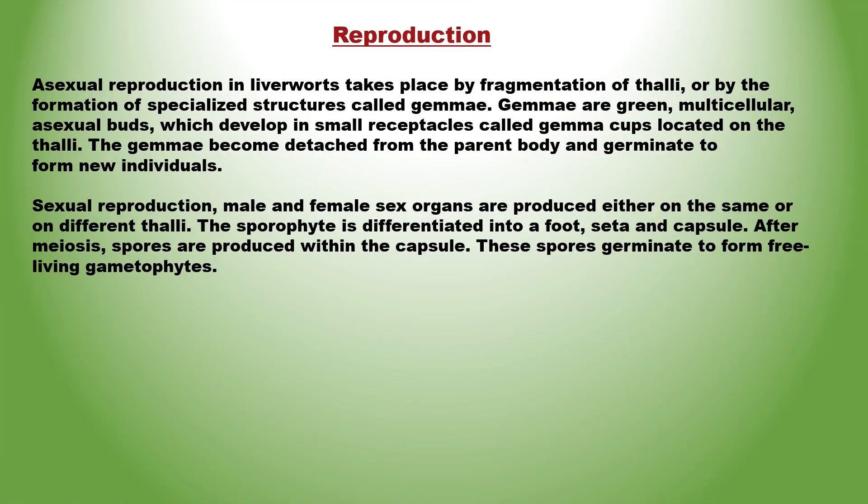Asexual reproduction in liverworts takes place by fragmentation of the thalli or by formation of specialized structures called gemmae. Gemmae are green, multicellular, asexual buds that develop in small receptacles called gemma cups present on the thalli. The gemmae get detached from the parent body and germinate to form new individuals.